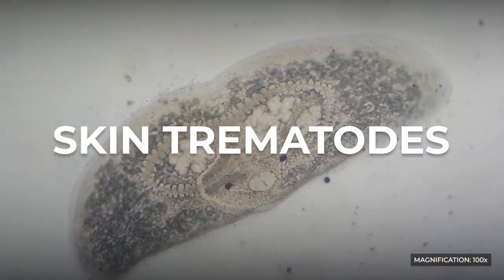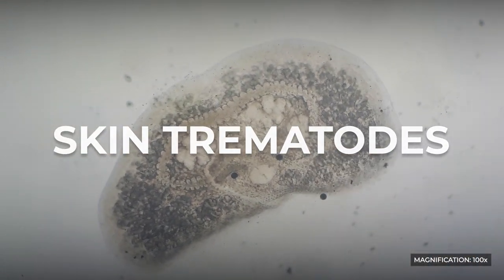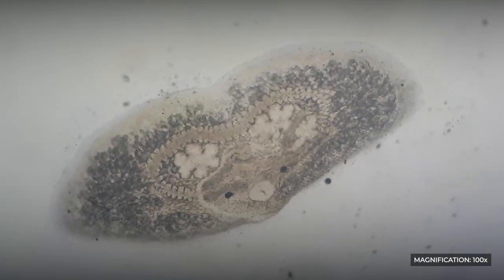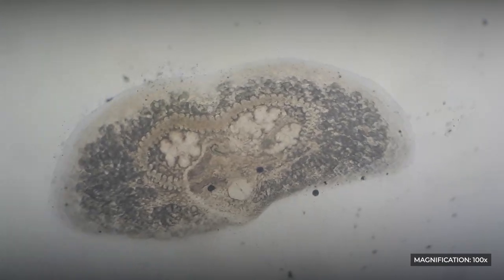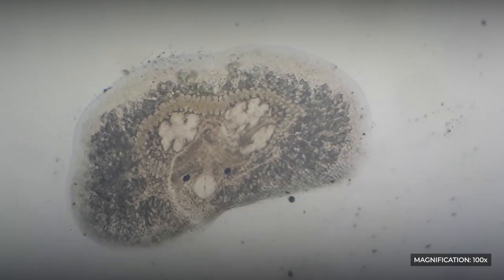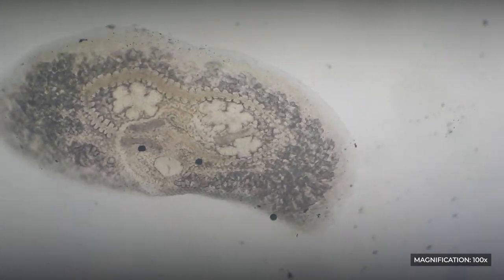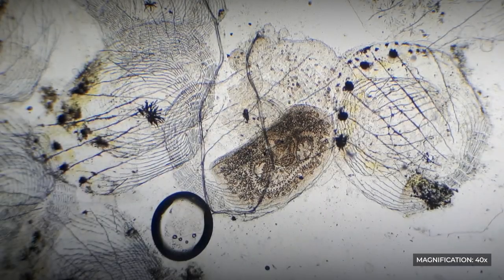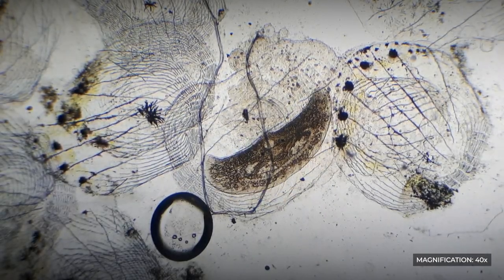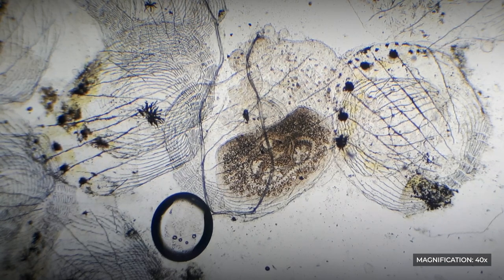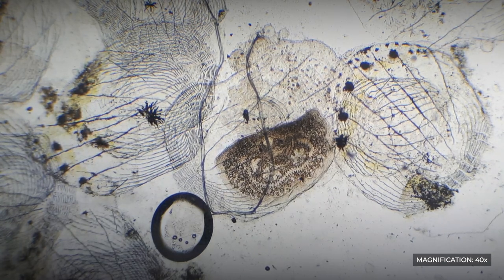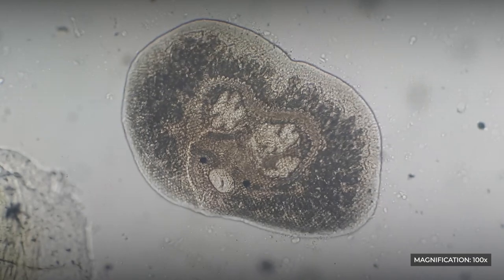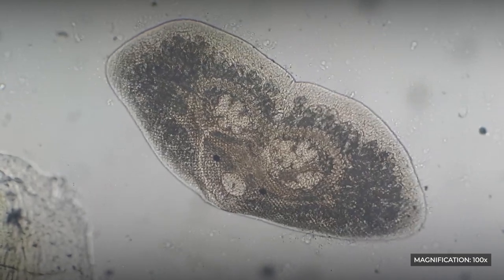Skin Trematode: Flatworms of the genus Transversotremor primarily parasitize marine fish species, although there are also species that affect freshwater fish. They are not commonly found in scrapings from the skin of fish. But if you come across a similar butterfly-like worm with a patterned design, you will recognize it as this parasite.